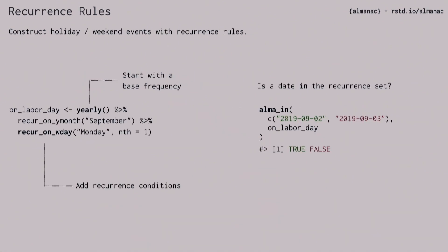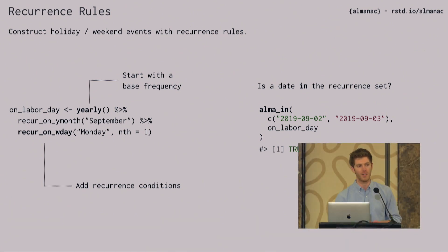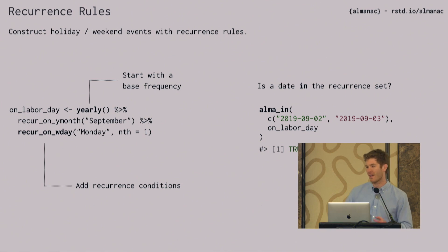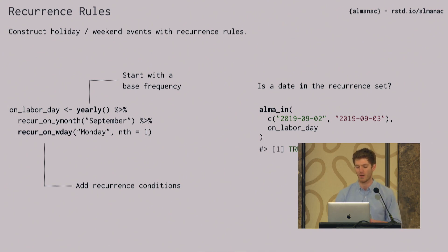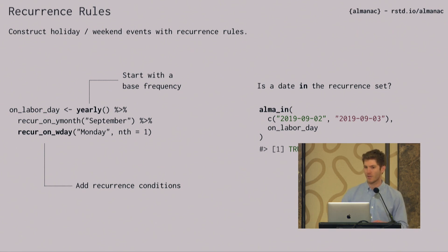Almanac is a completely different package. It came out of a use case for Slider where I really needed to control weekends and holidays. You can create a holiday object with Almanac by starting with a base frequency, like yearly or weekly, and then adding on these recurrence conditions. For Labor Day, it happens in September and it's on the first Monday in September. Then you can do fun things with that object, like asking what days are Labor Day, which returns yes or no.